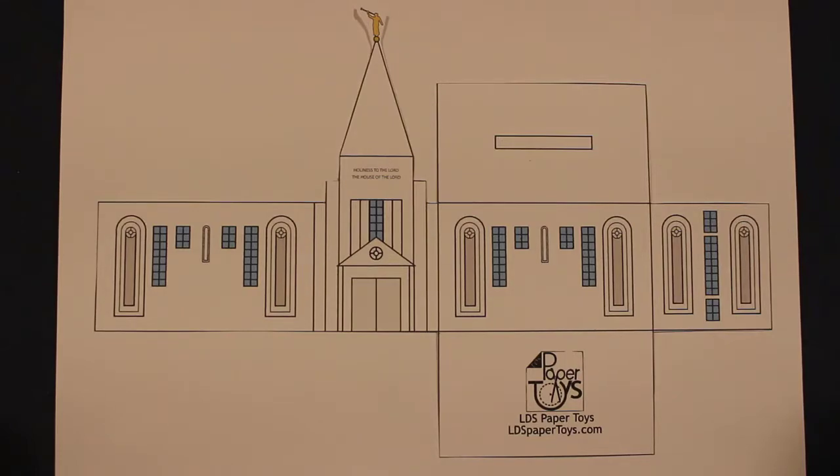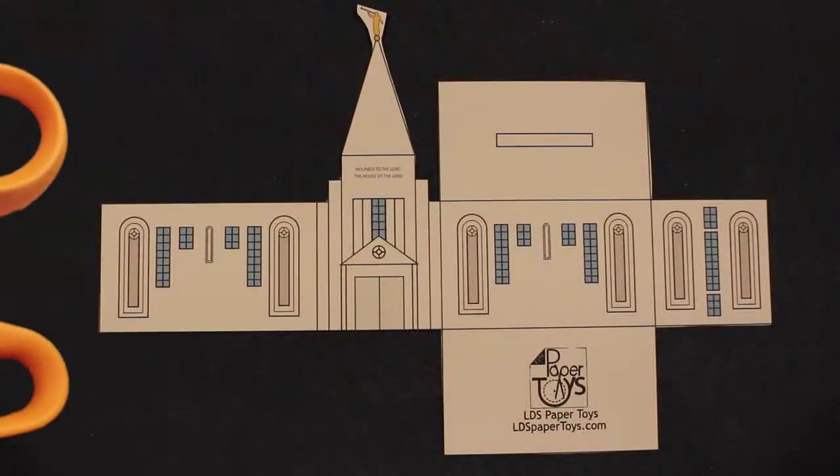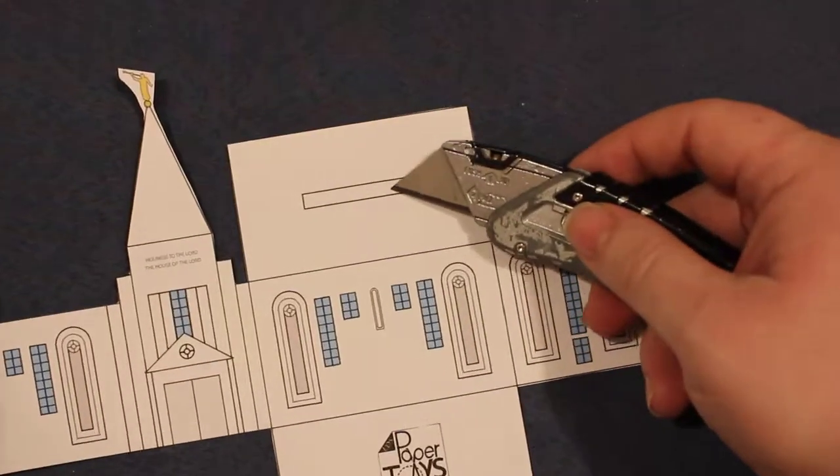Just real quick, here's the simple version. All you really have to do is cut out these main shapes and then you're just going to cut this opening where they're going to put their money.